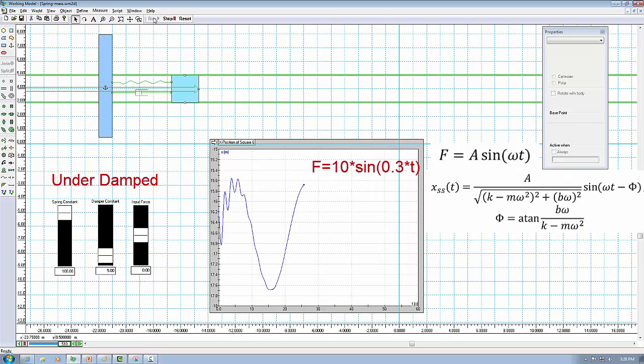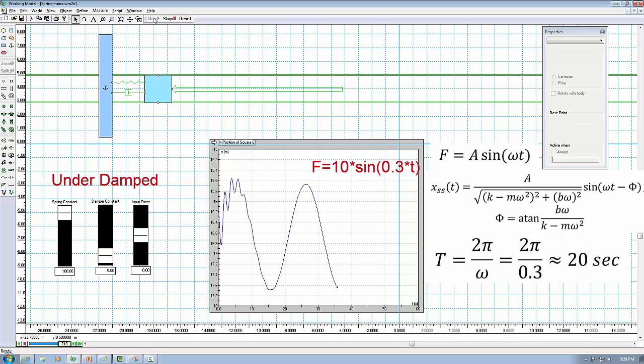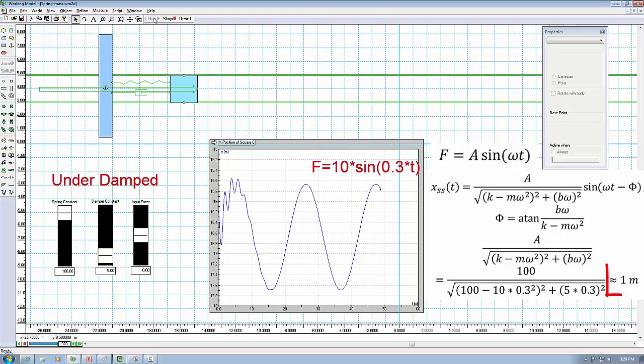And our oscillation at the steady state is going to be really slow because the input frequency is only 0.3 rad per second. Therefore, the period is about 20 seconds. Now it's come to a steady state. You can tell from the figure the period is about 20 seconds. You can calculate the amplitude. This time it gives you 1. And we can see from the peak to valley, it is about 2 from the figure.